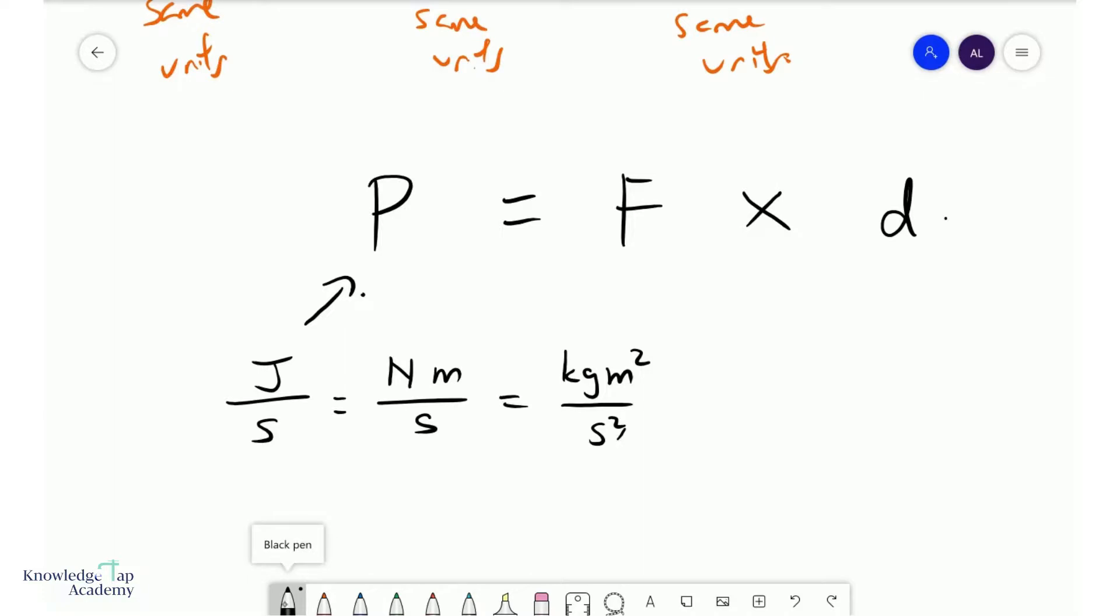And now we compare this with the base units on this side. So force and distance. Well, force is, of course, kgm over s squared and d is m. So that is m. Another m here.